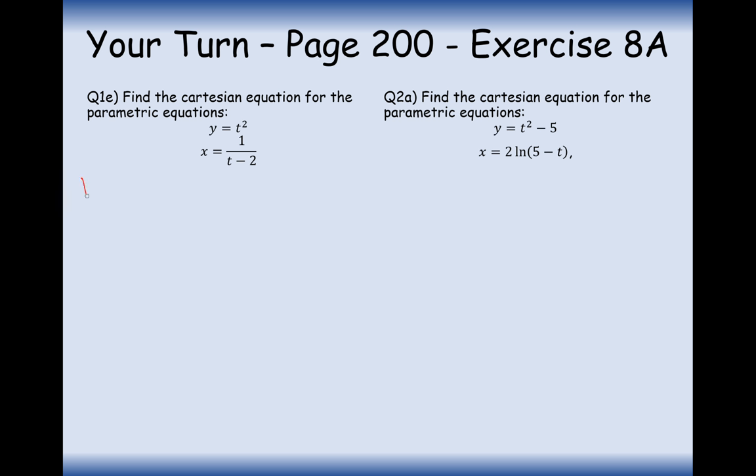Let's have a go at question 1e. Let's start with x equals 1 over t minus 2. Rearrange this and we get x times t minus 2 equals 1. So, times both sides by t minus 2. Expand the brackets to x t minus 2x equals 1. Now, we want t equals something, to be able to substitute it into y equals t squared. So, what we'll then do is add 2x onto both sides and divide through by x.